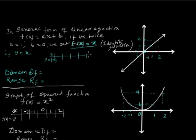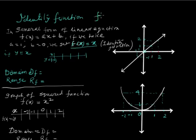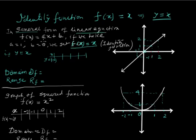Now we discuss some important functions. The first one is the identity function. Here f(x) = x, so y and x have the same value. This comes from the general form of a linear equation ax + b, where you take a = 1 and b = 0, giving f(x) = x.